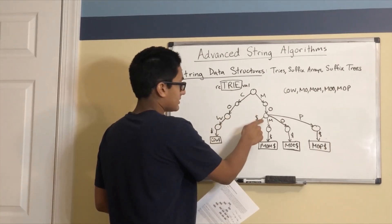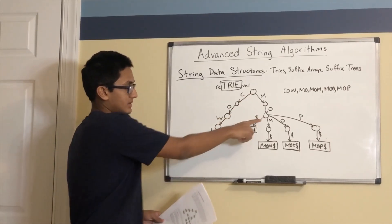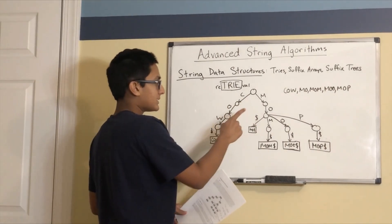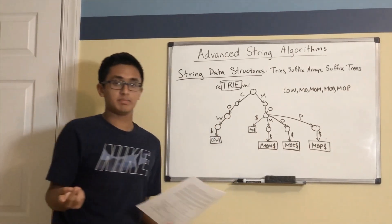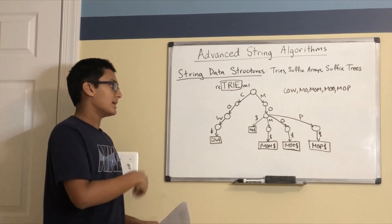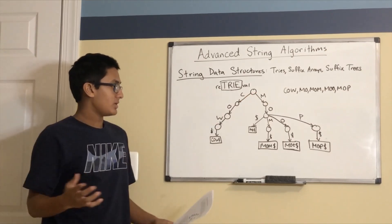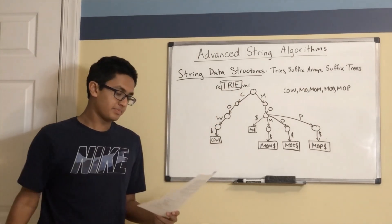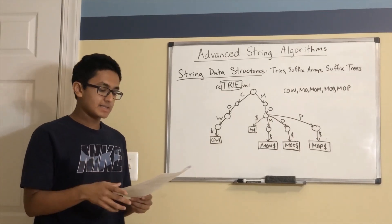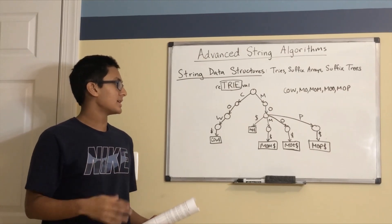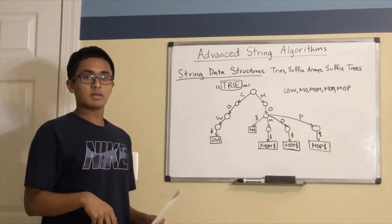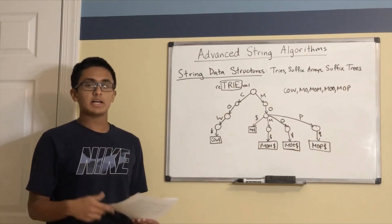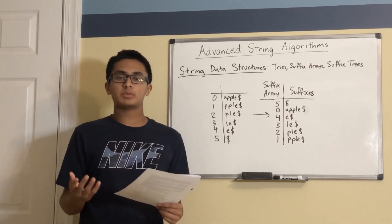Another example is the path from the root to a depth level 2 vertex giving the prefix MO. MO is a prefix for MO, MOM, MU, and MOP in this example. Every string is also represented by a path from the root node to one of the leaves — for example, CO is an entire string represented by a path from the root to a leaf. The advantage of tries is that they combine common prefixes and allow us to perform computations on prefixes very efficiently. Note that we append a dollar sign at the end of every string to make it easier to identify when a string ends.